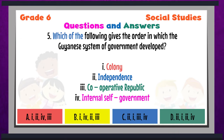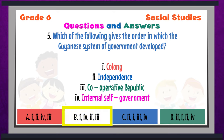Question 5: Which of the following gives the order in which the Guyanese system of government developed? 1 — colony; 2 — independence; 3 — cooperative republic; and 4 — internal self-government. A: 1, 2, 4, 3; B: 1, 4, 2, 3; C: 2, 1, 3, 4; D: 3, 1, 2, 4. The answer to question 5 is B — colony, internal self-government, independence, cooperative republic. That's the order in which the Guyanese system of government developed.